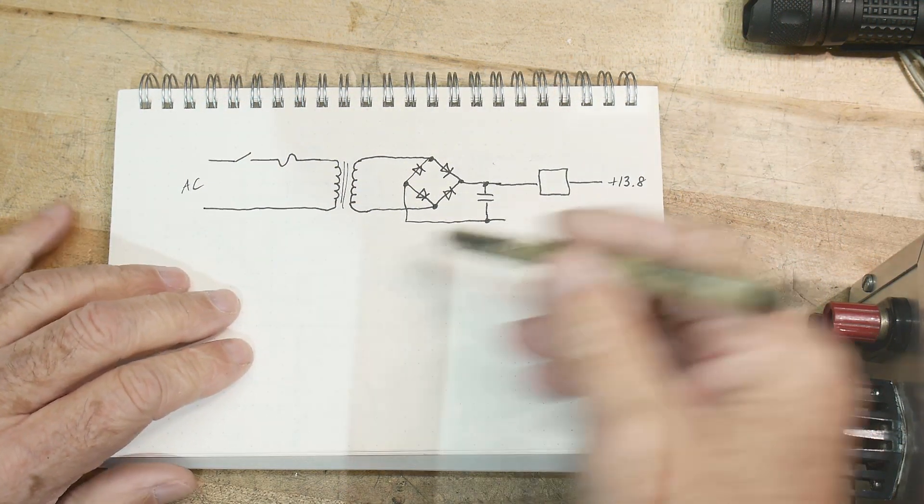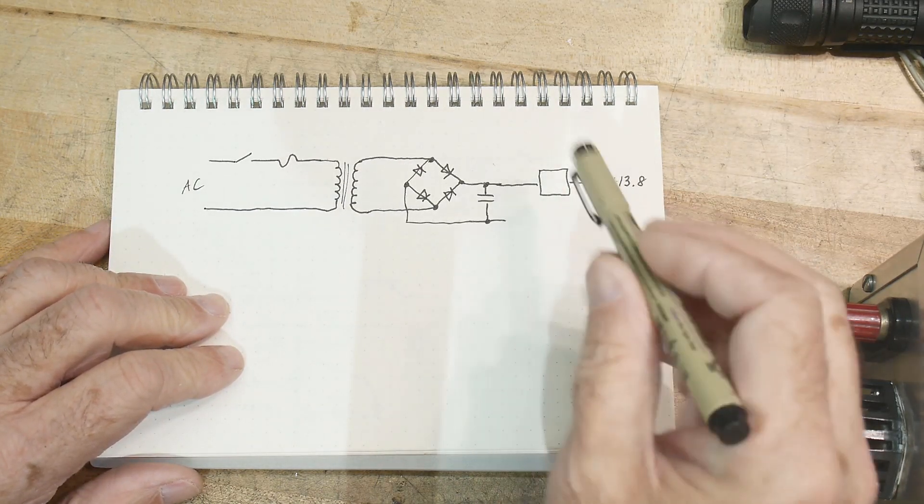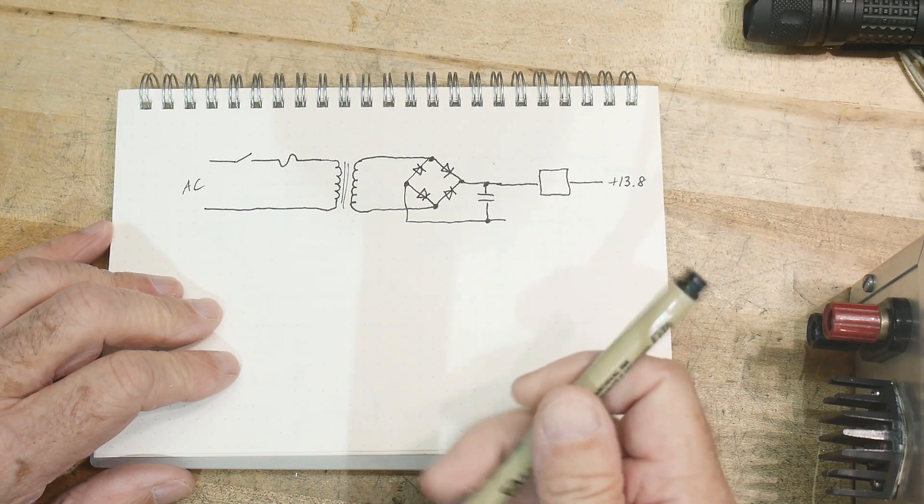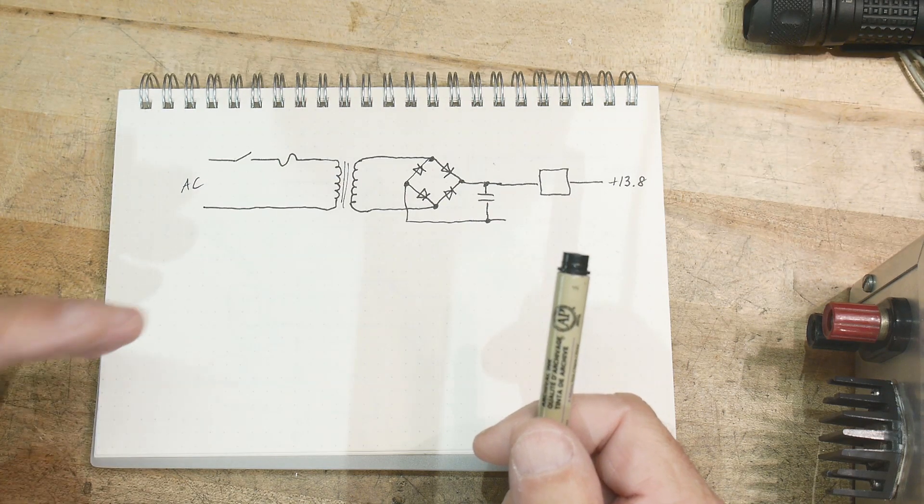So inside this box is just the typical stuff. A switch, a fuse, transformer, bridge rectifier, filtering, and then a three terminal regulator. That part on the back is actually a TO3 three terminal regulator. You can find those things. They're not all that common these days, but it's a three amp part.